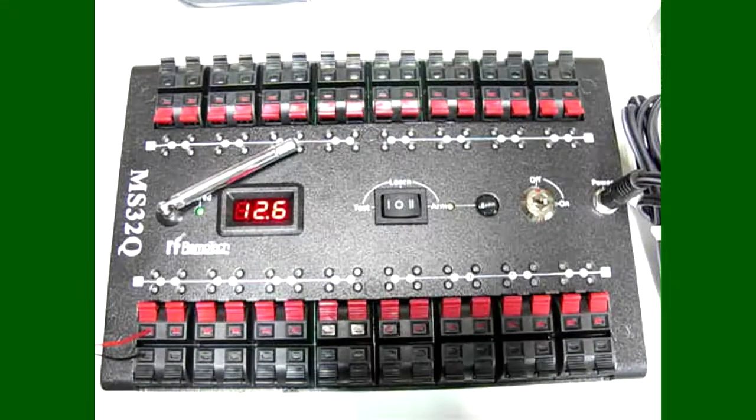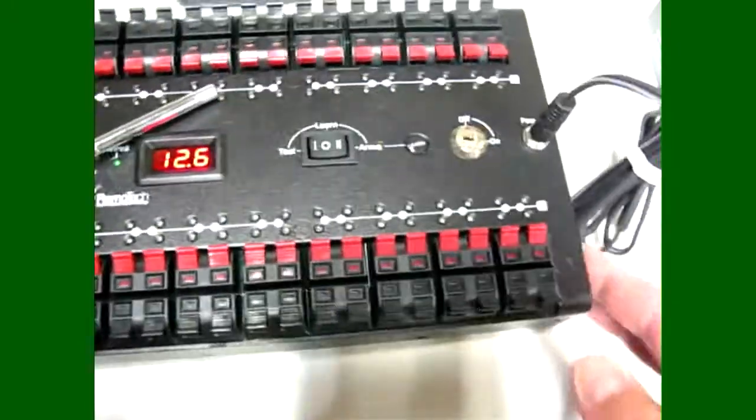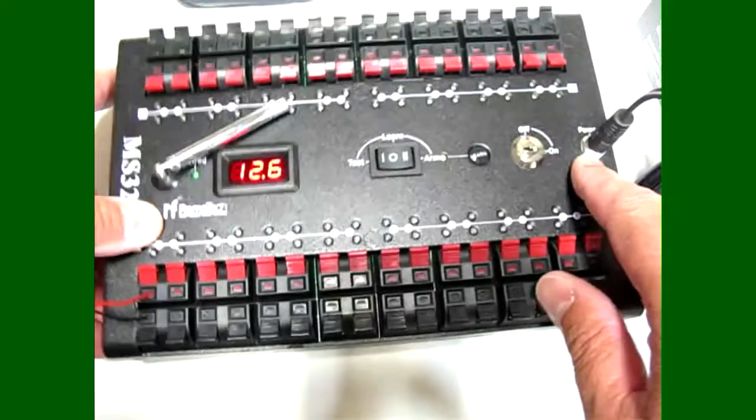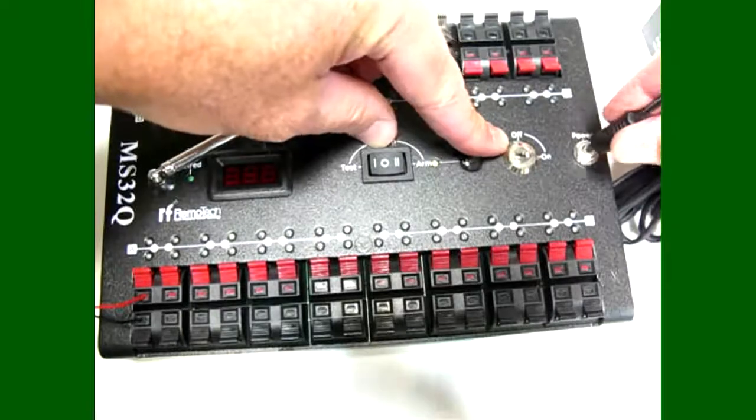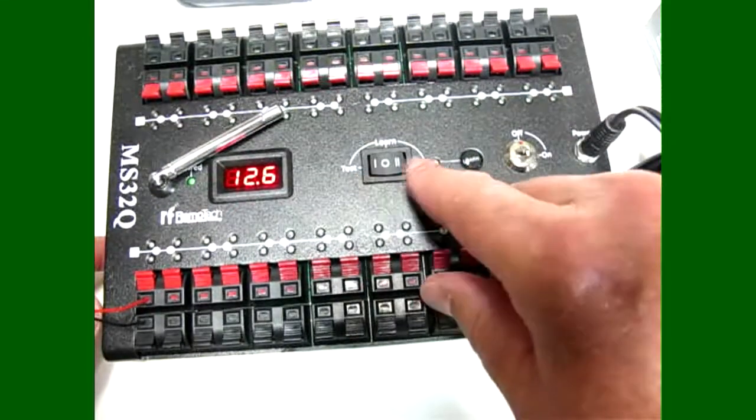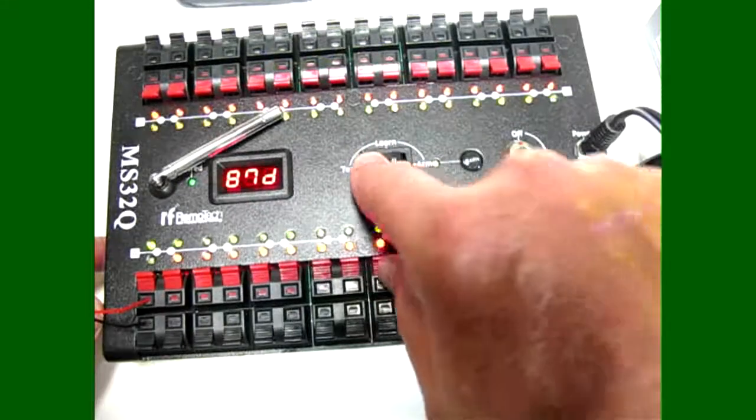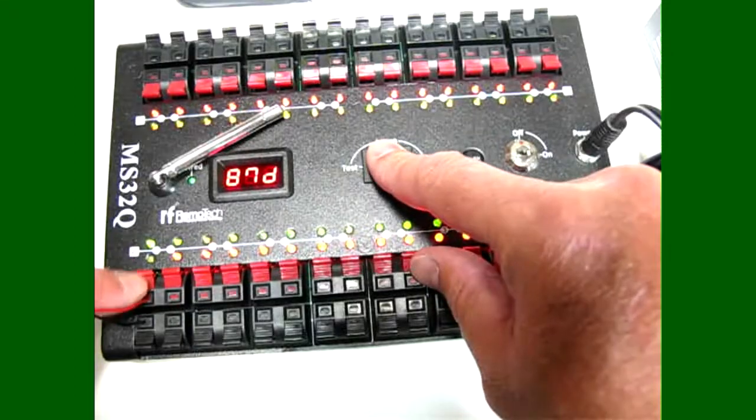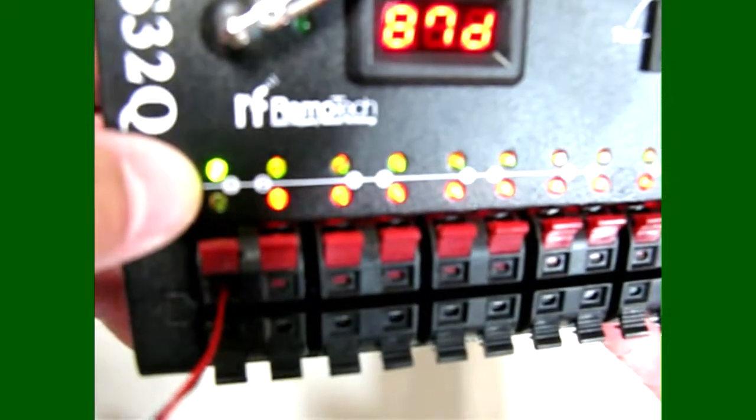When you're receiving the MS32Q, you'll see that the module has a power port on the side, a key switch with two keys, a learn button so you can learn remotes, and a toggle switch with a middle off position for the learn mode. There's a test function once you have igniters in the firing system itself.